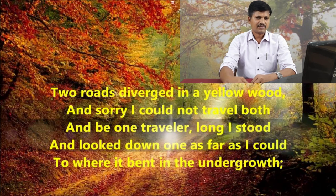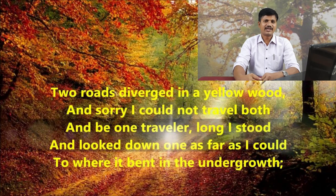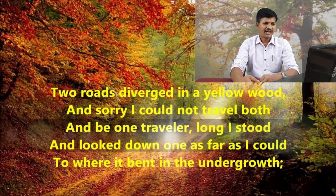Let me read the first stanza: 'Two roads diverged in a yellow wood, and sorry I could not travel both, and be one traveller, long I stood, and looked down as far as I could, to where it bent in the undergrowth.' In the first line, the poet talks about the season metaphorically — the yellow wood. Where the road diverges into two ways, both ways are covered in yellow wood, meaning they are covered with yellow leaves — the fallen leaves from trees during the autumn season, which we also call the fall season.